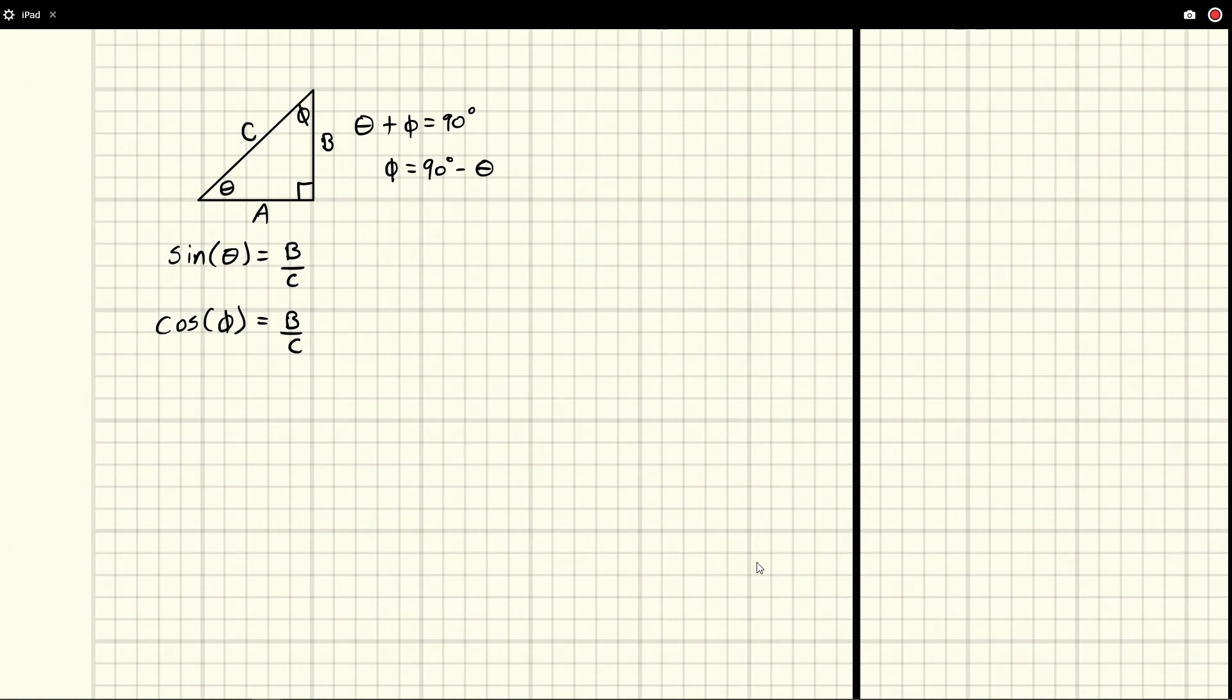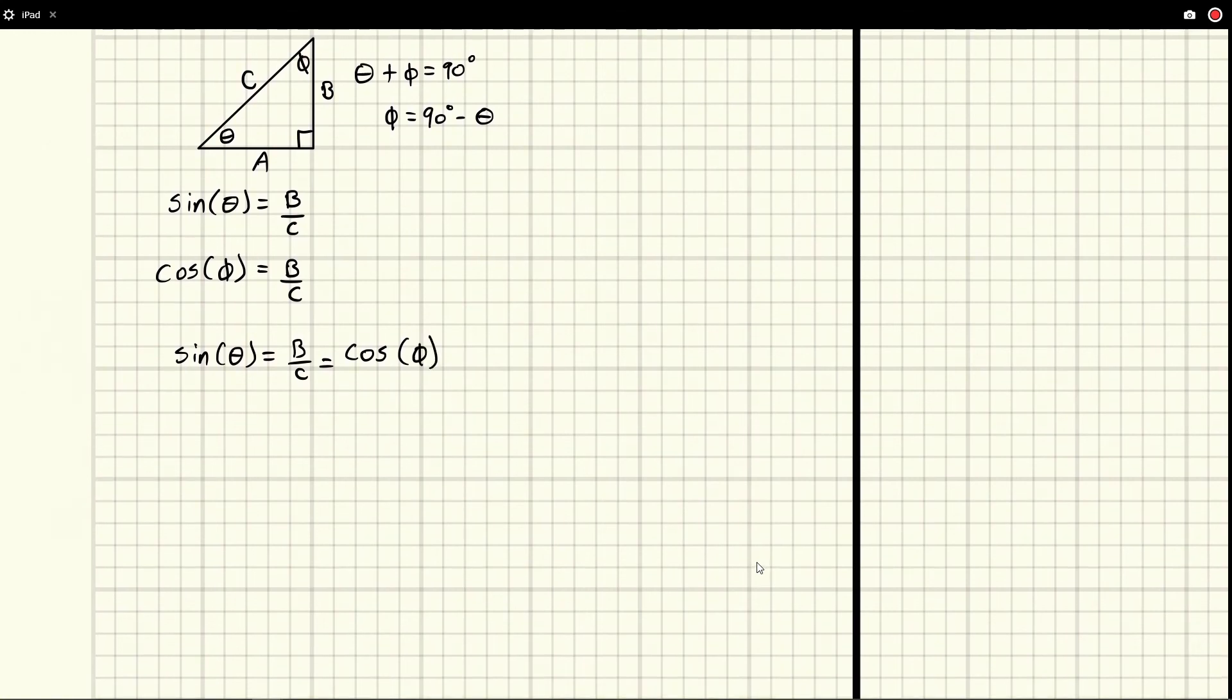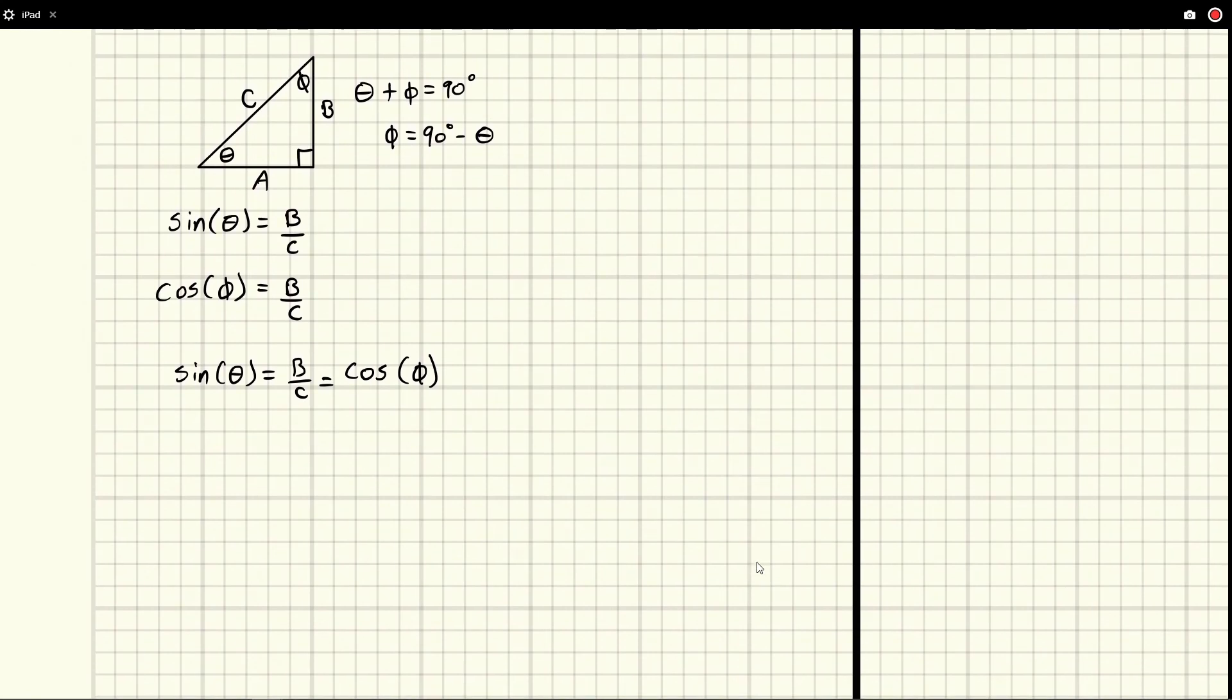We end up being able to say that sine of theta is equal to B over C, which is equal to cosine of phi. And so this is a pretty powerful relationship we have here. It can come in handy in a variety of situations. But we can go a step further. We could say, well, we also know how phi relates to theta, and we know that up here, they have to add to be 90 degrees.